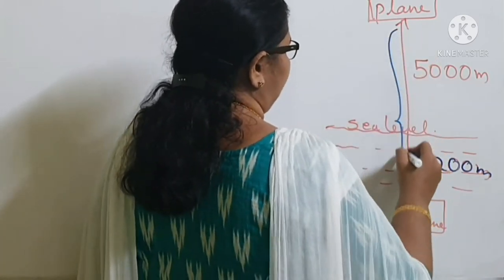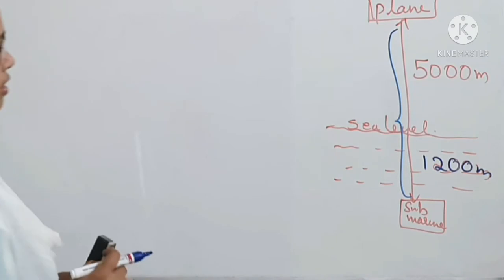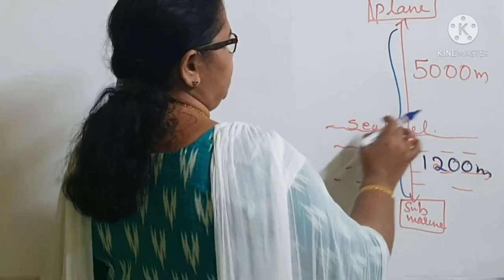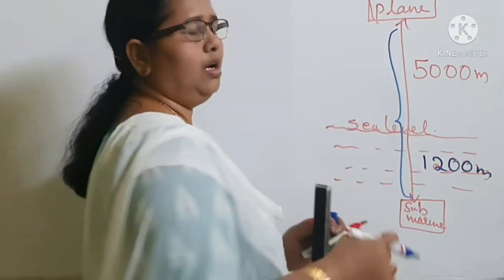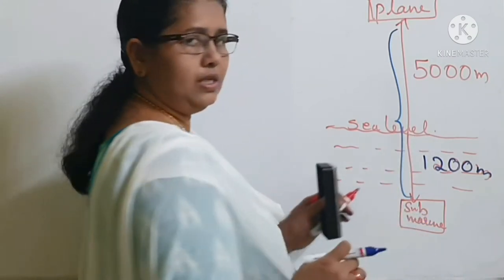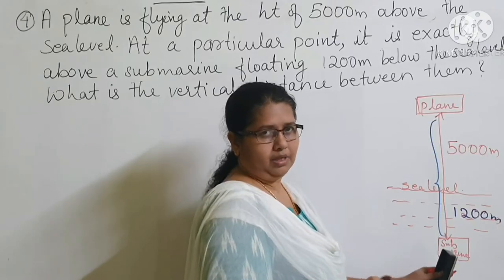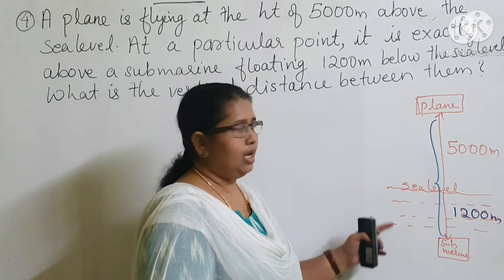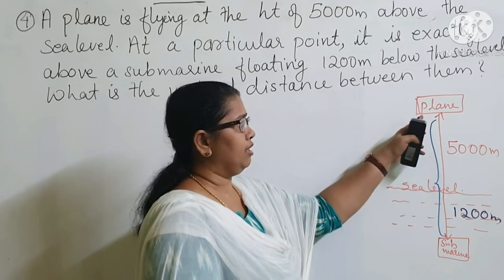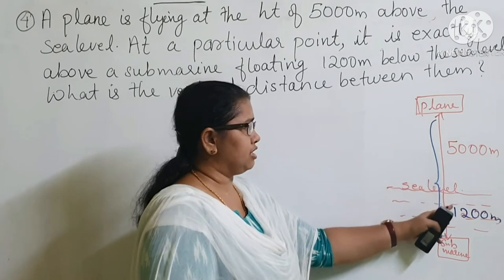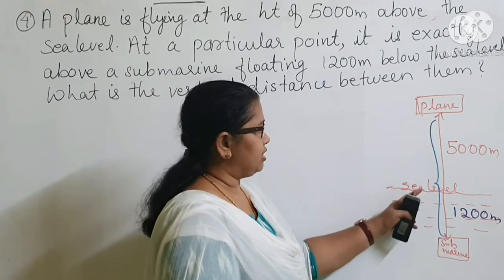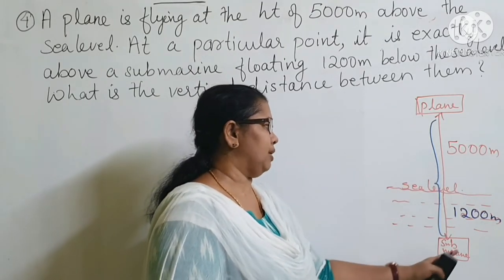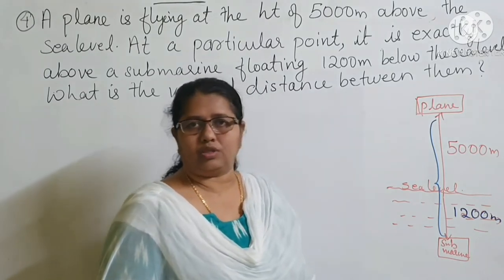We have to find the total vertical distance between them. The sea level will be represented by 0. Distances above the sea level will be taken as positive, and distances below the sea level will be taken as negative. So the distance from sea level to the plane is positive 5000 meters, and from sea level to the submarine is negative 1200 meters.